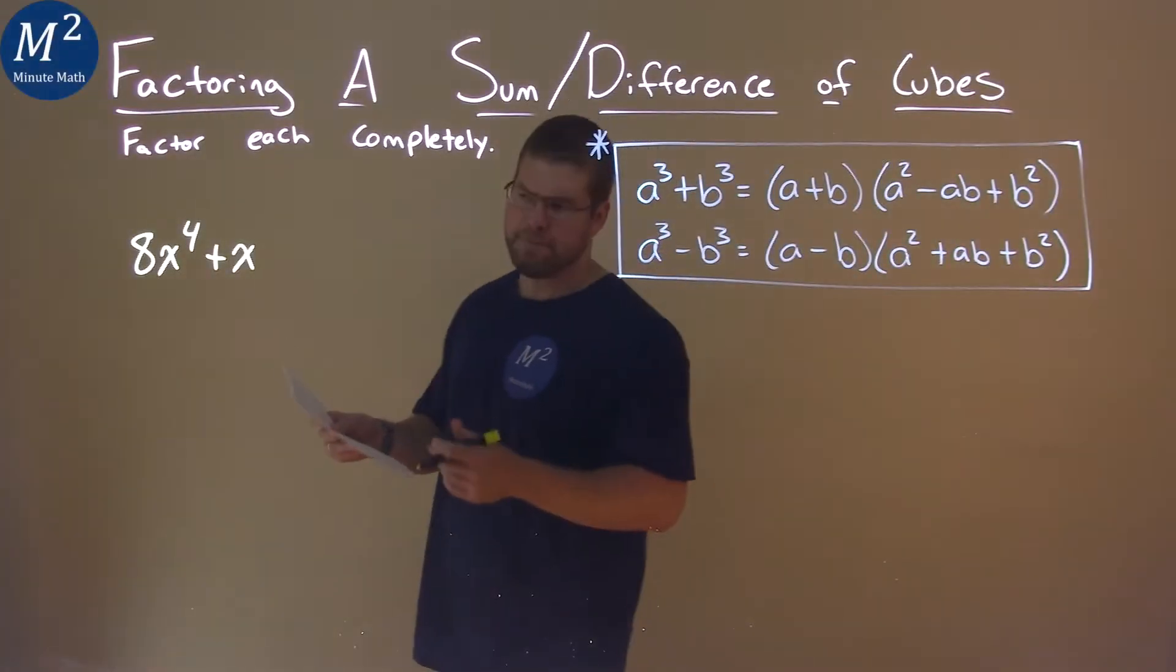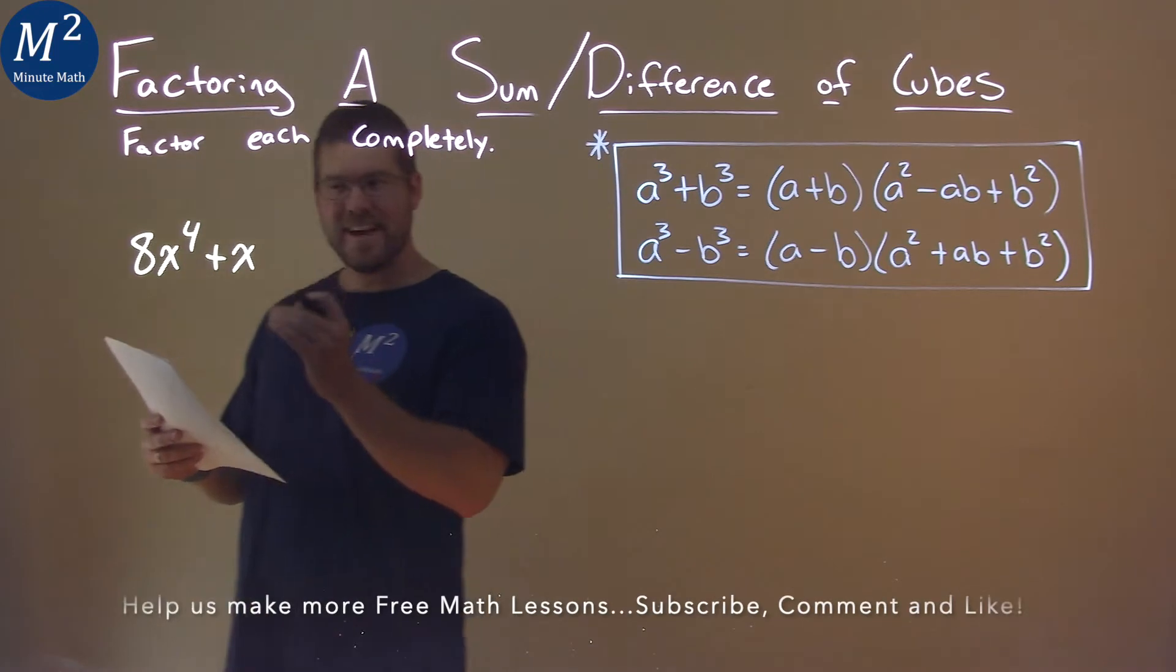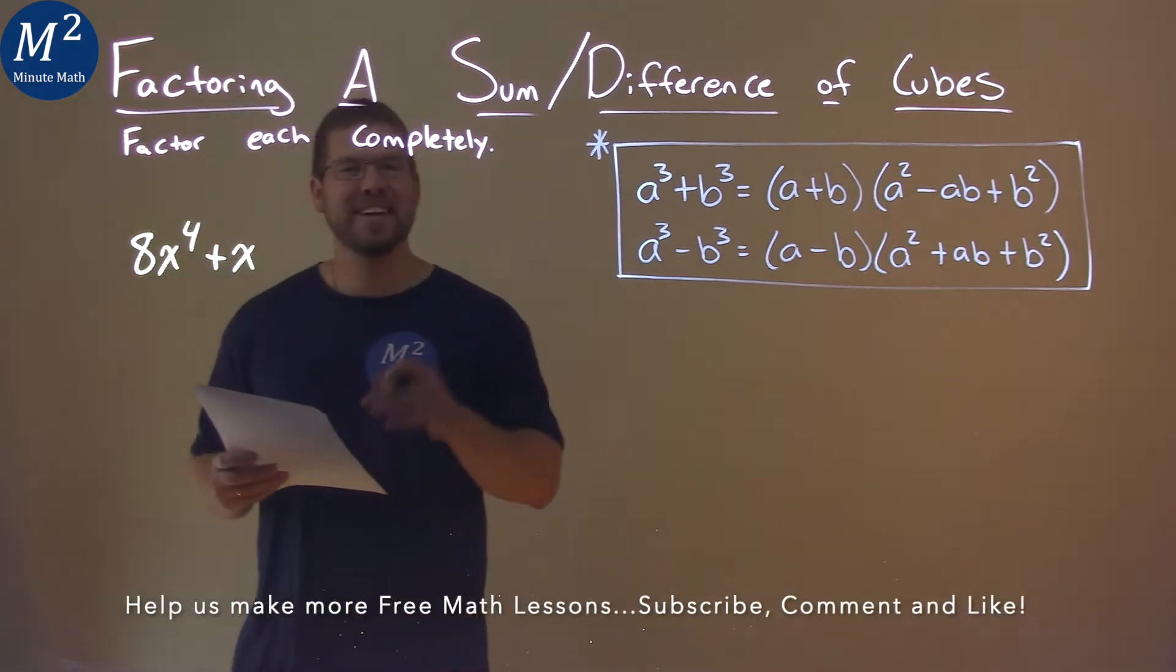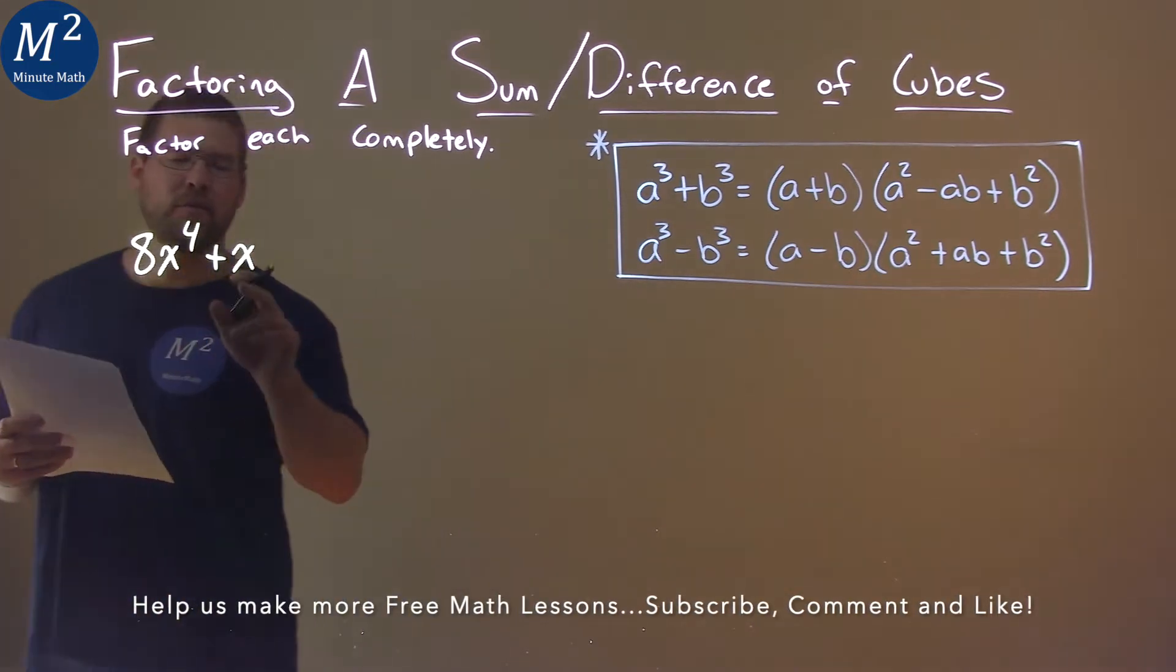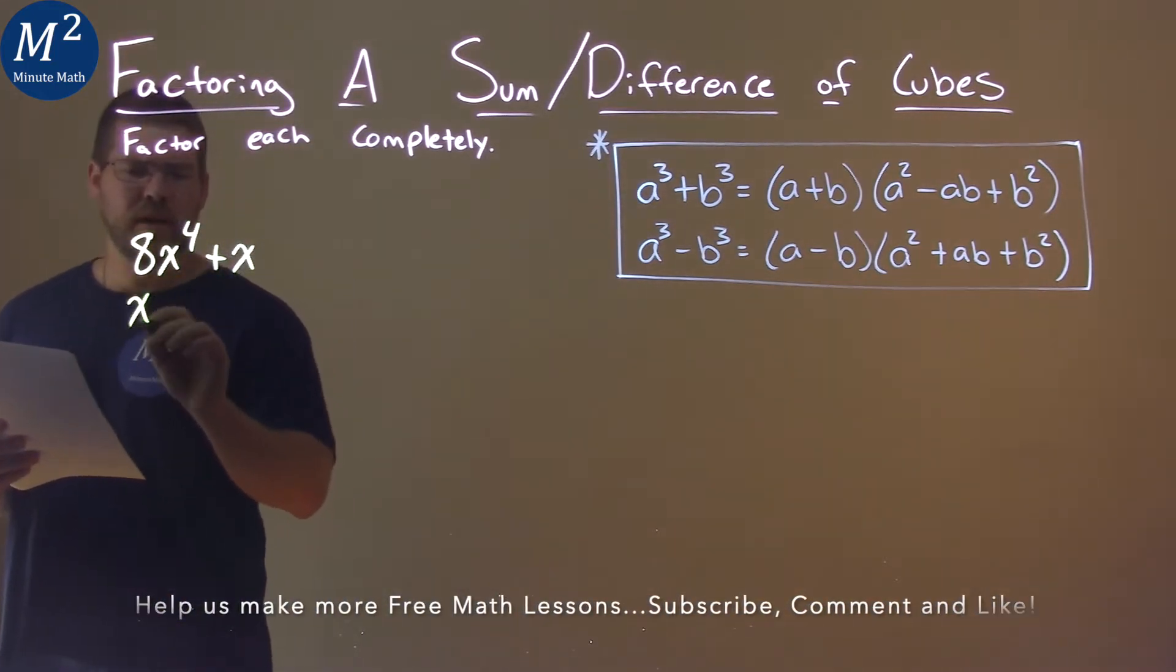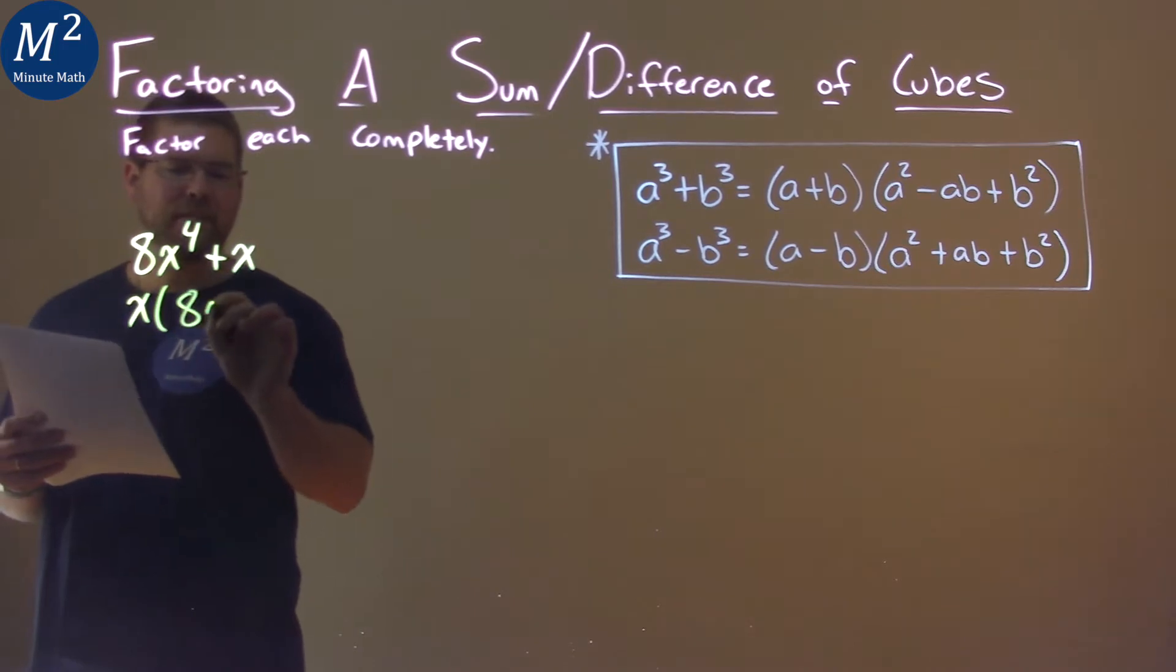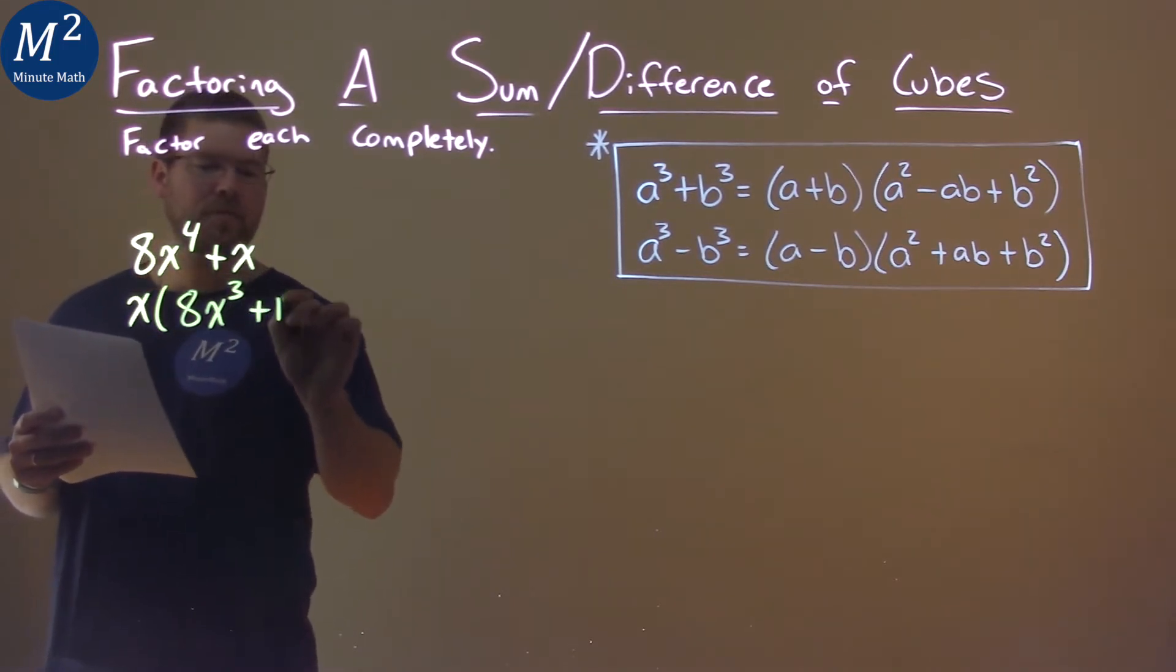We're given this problem right here, 8x to the fourth power plus x, and we need to factor this completely. First thing I notice here is there's an x in both parts, so let's pull that out. x comes out, and we have 8x to the third now plus 1.